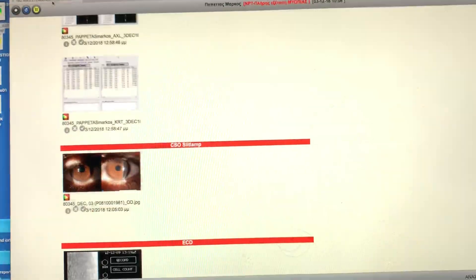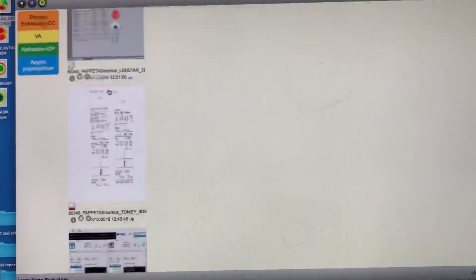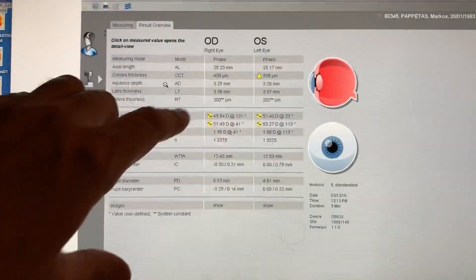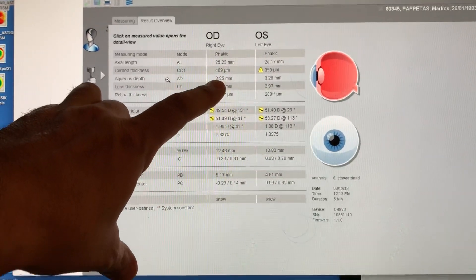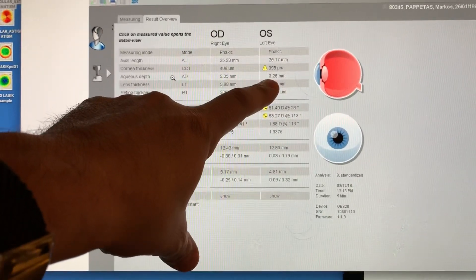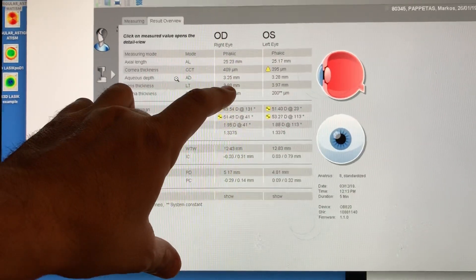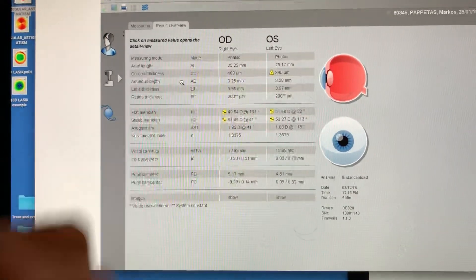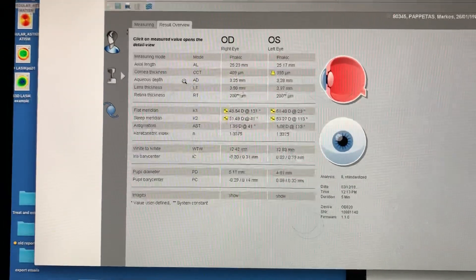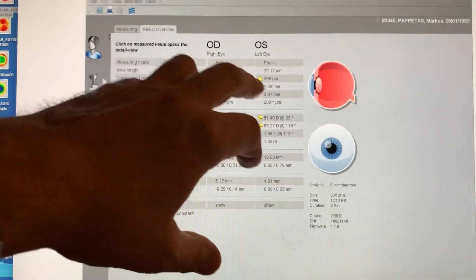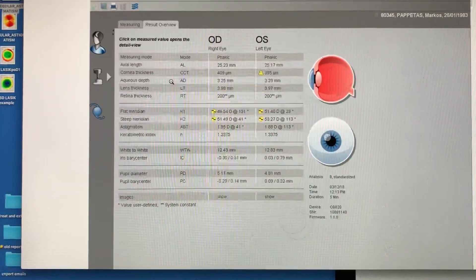Looking at the lens star parameters, he does have the room to do this. He has an anterior chamber depth of 325, 328, plenty room for an ICL, and his lenses are not big enough to be considered cataracts. We can also see the thickness numbers here, 409, 395, OD OS respectively.